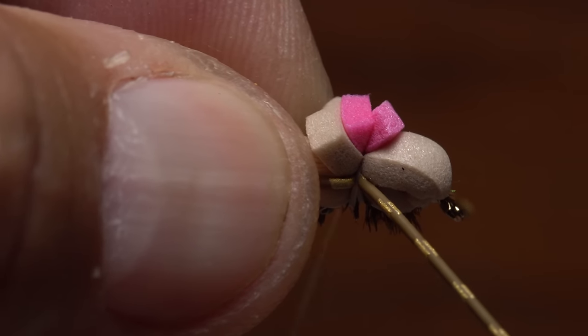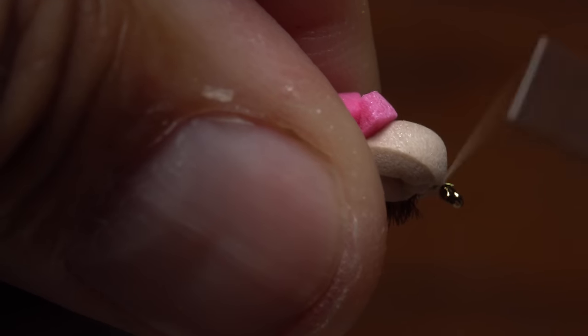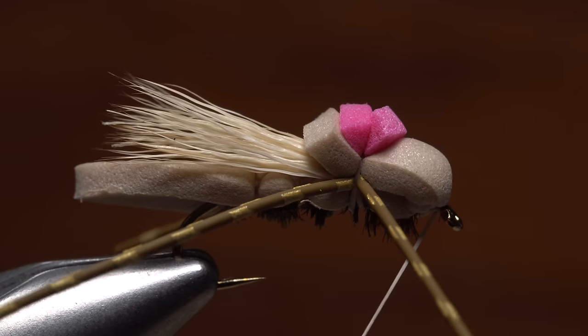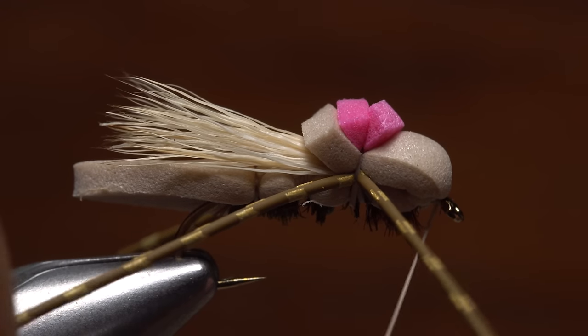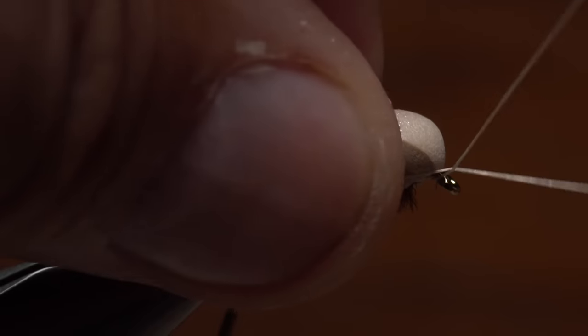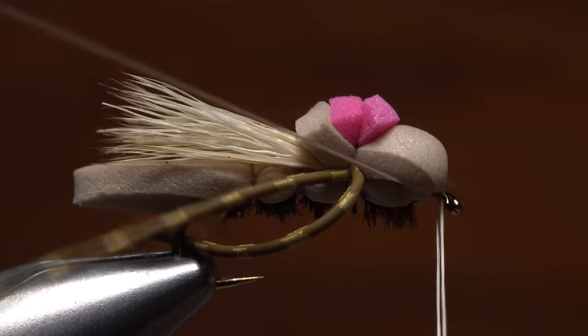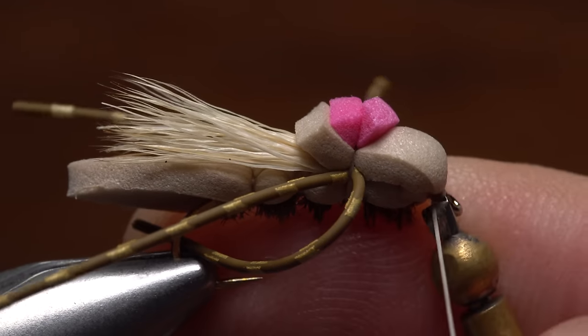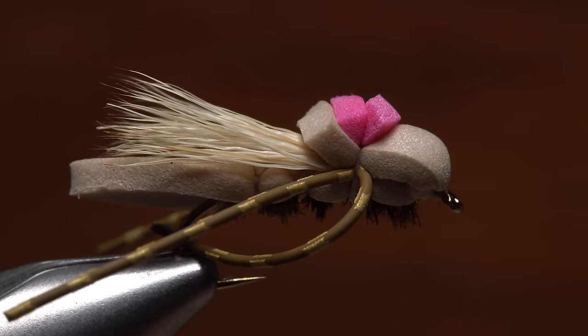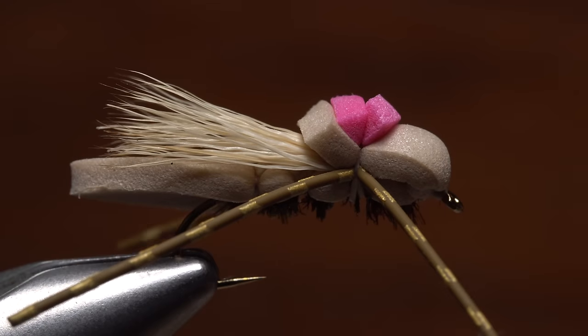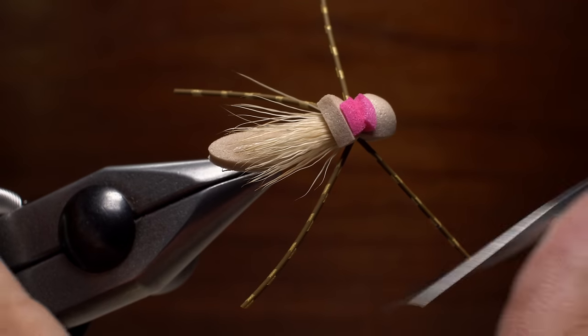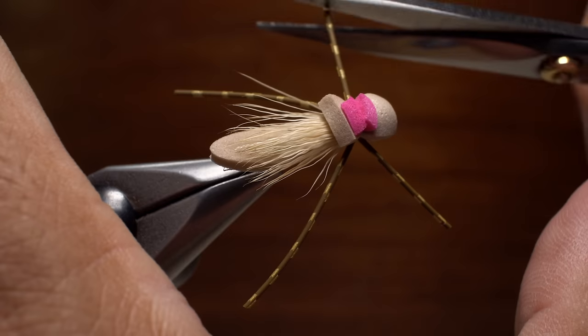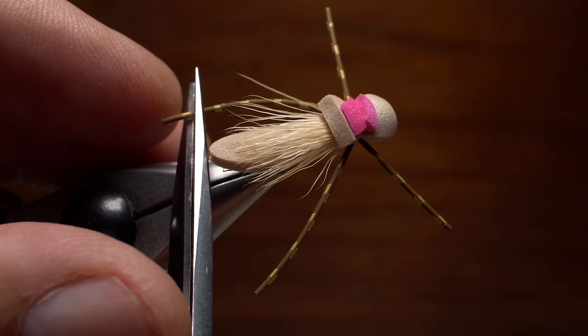Take another single wrap of tying thread to anchor the legs, then pull them back and relocate your tying thread to behind the hook eye. Once again pull the front legs rearward, then complete a five or six turn whip finish. Seat the knot well and snip or cut your tying thread free. At this point it's a good idea to check the rubber legs for length. I like the front legs to be about a full hook in length and the back ones to be slightly longer.